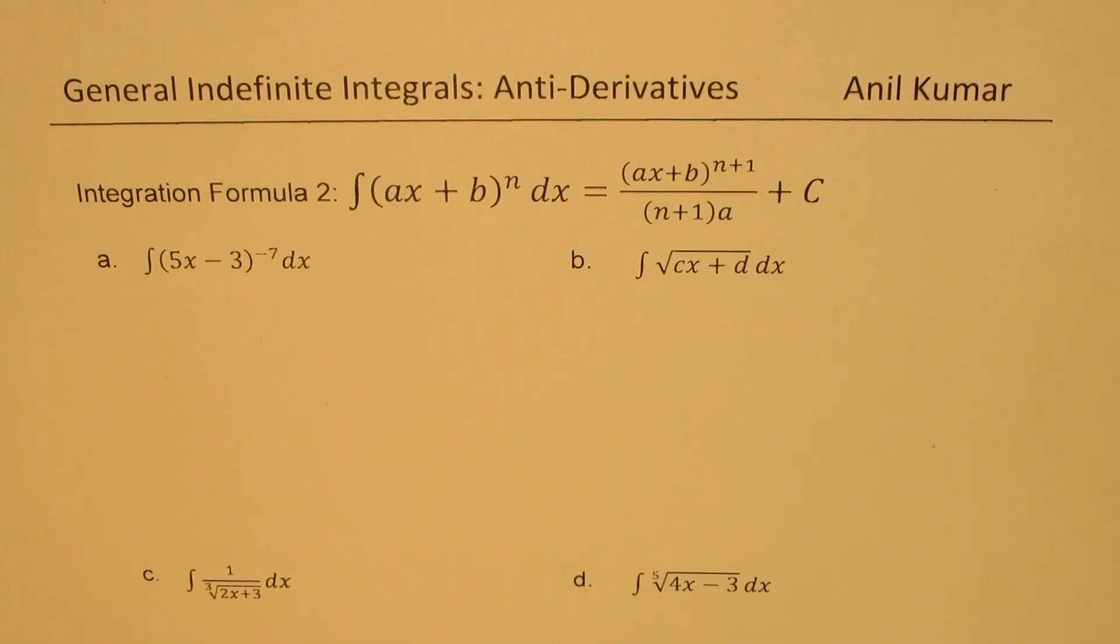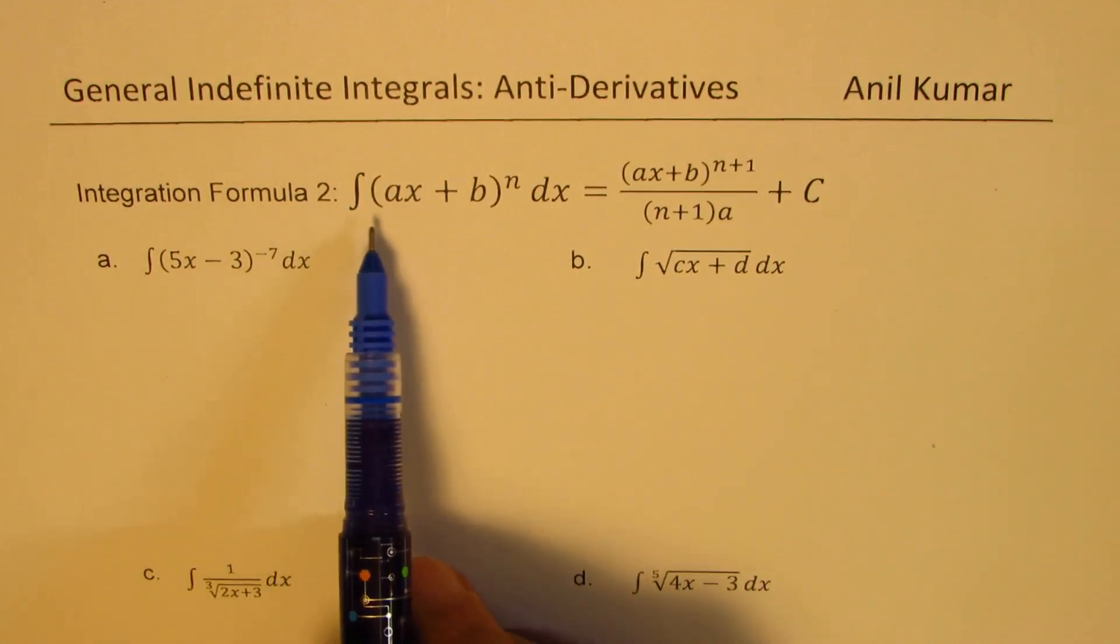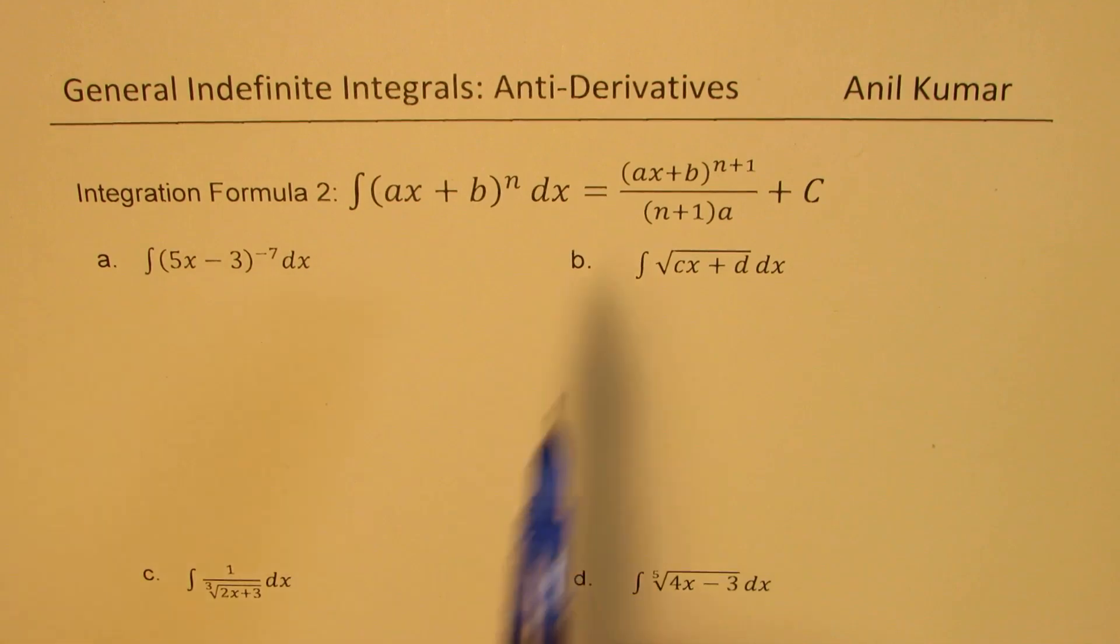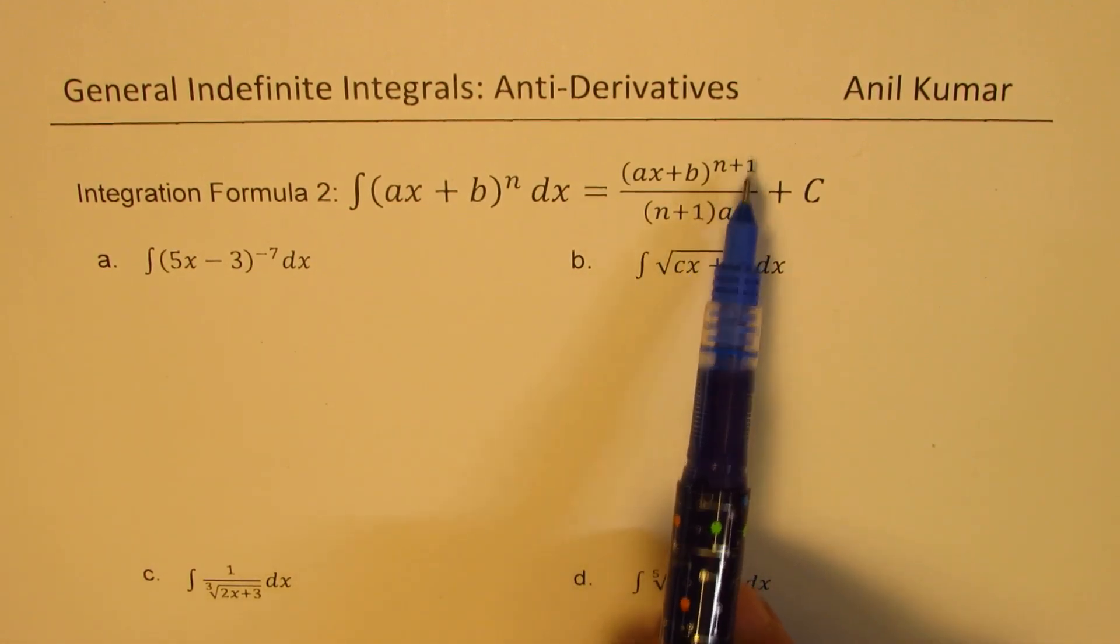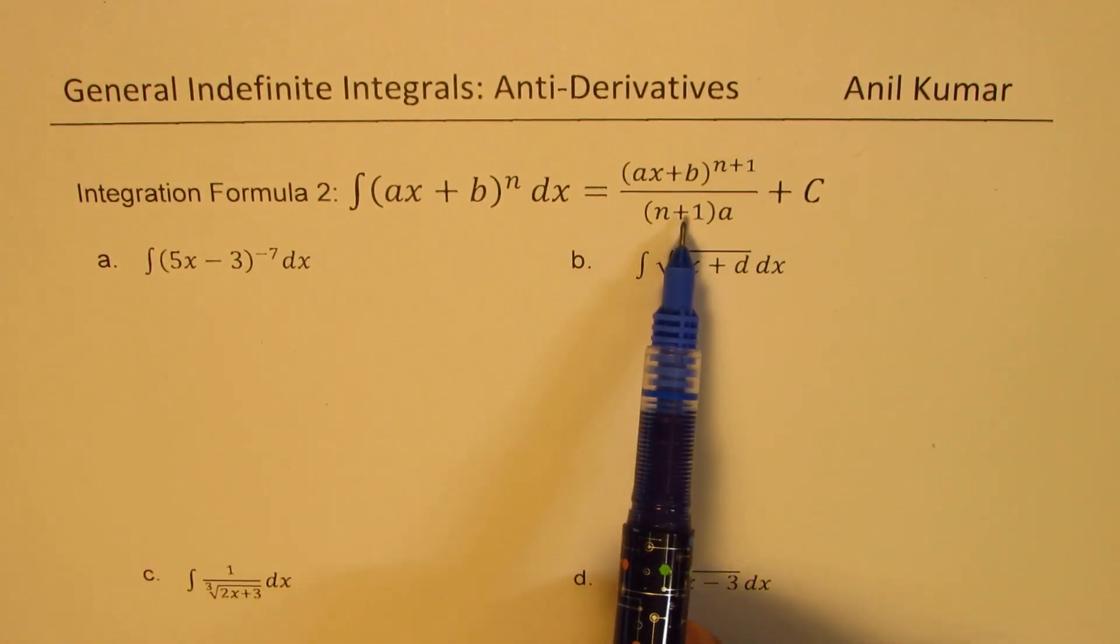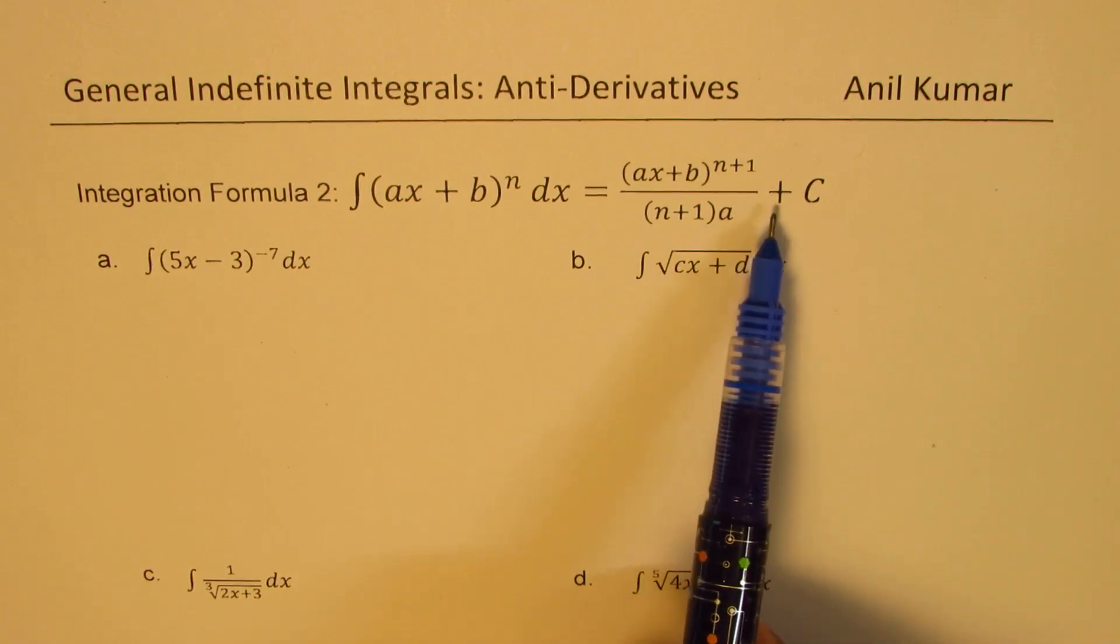I'm Anil Kumar. Welcome to Global Learning. Here is second formula for integration, which is integral of ax plus b to the power of n dx is equal to ax plus b to the power of n plus 1 over n plus 1 times a plus C.